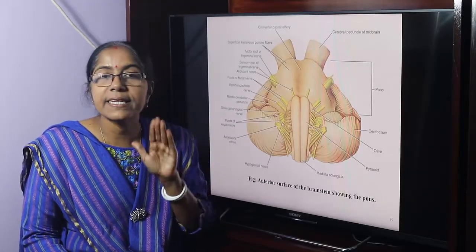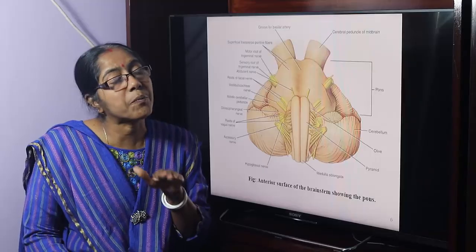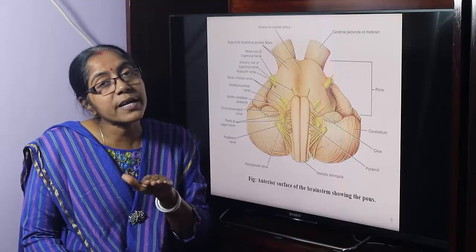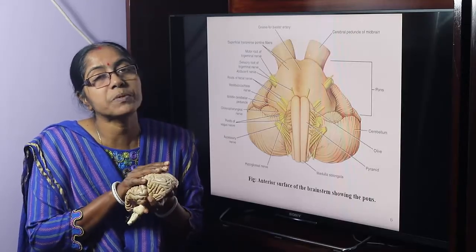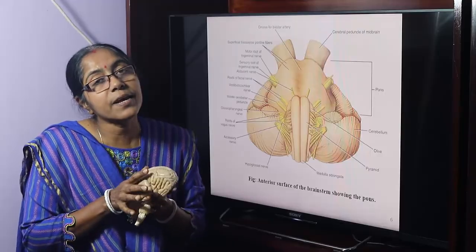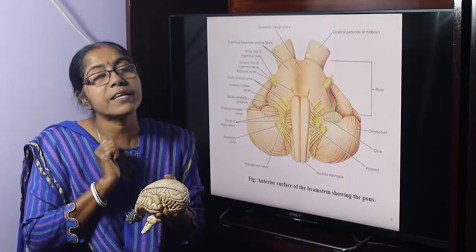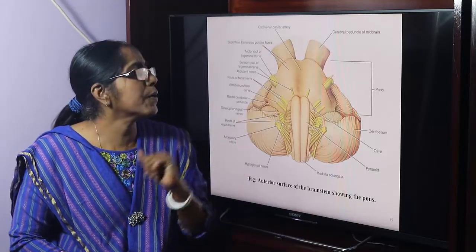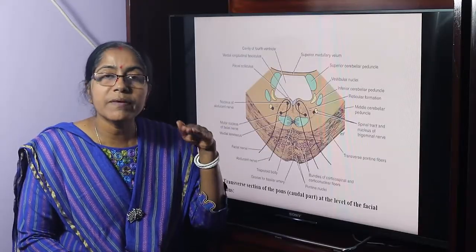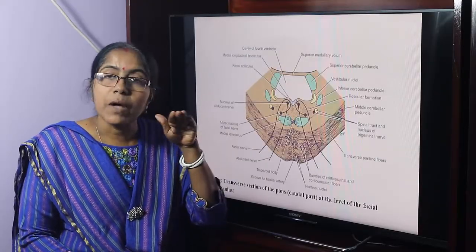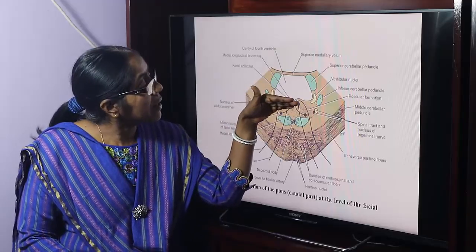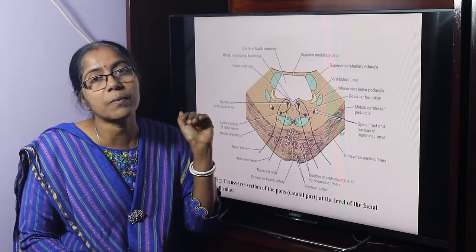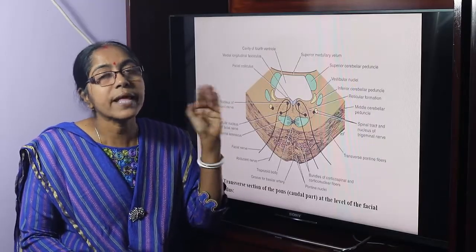Looking at the brainstem — midbrain, pons, and medulla — we can see the gray matter and white matter distribution. In the cerebral hemisphere, white matter is internal and gray matter is on the surface. In the cross-section of the pons, there is a larger ventral basilar part and a smaller dorsal tegmental part.